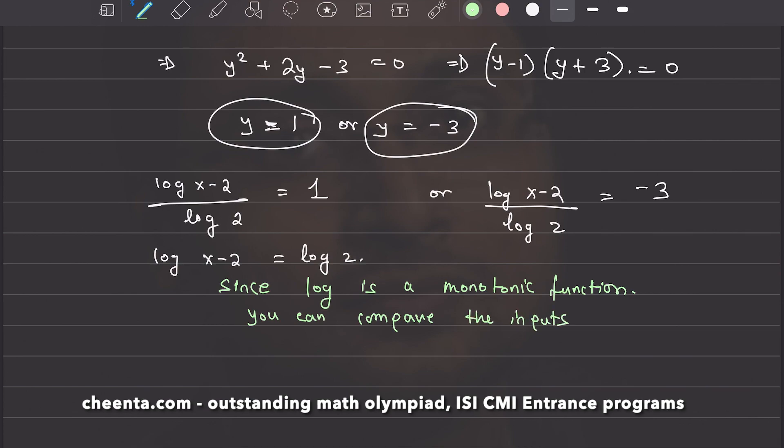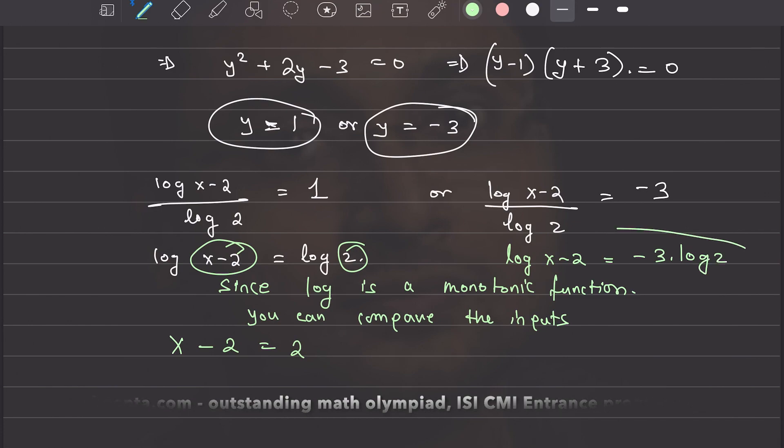That means you can say that x minus 2 is equals to 2, or x equals to 4. That's great.